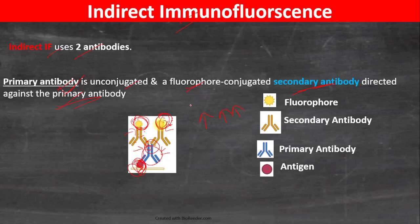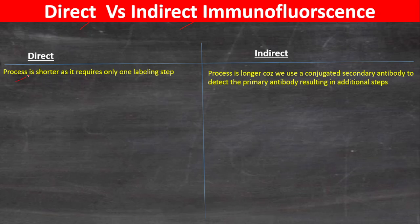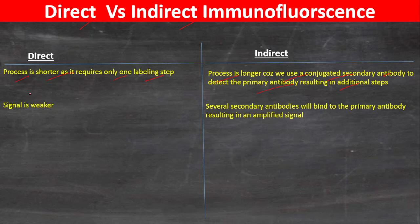Now for the differences between direct and indirect immunofluorescence. First, direct immunofluorescence is a shorter process because it only requires one labeling step, whereas indirect immunofluorescence is a longer process due to the additional step of using a conjugated secondary antibody. Direct immunofluorescence gives a weaker signal, whereas in indirect immunofluorescence, several secondary antibodies bind to the primary antibody, resulting in an amplified signal.